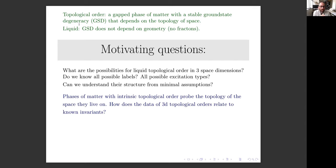This is a stable situation because the different ground states, if you put the theory on a torus, are related not by any local operator but by some extended operators. These extended operators transport topologically non-trivial particles. In 2+1 dimensions, these particles are anyons.